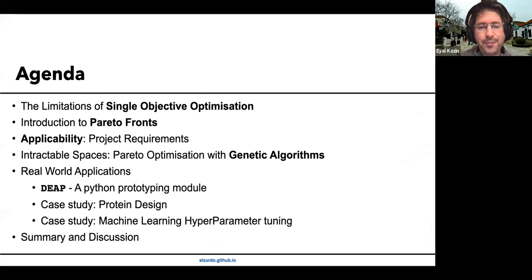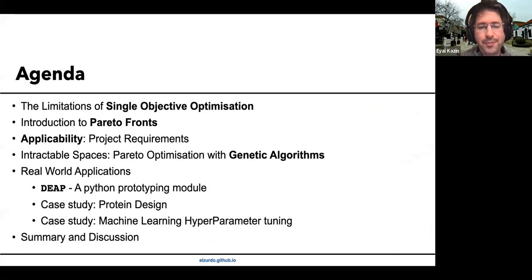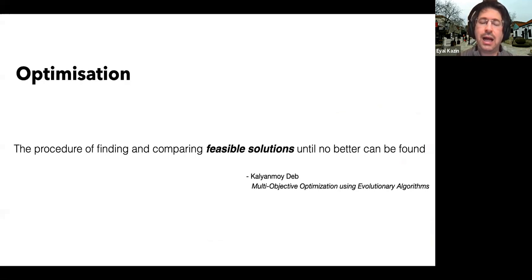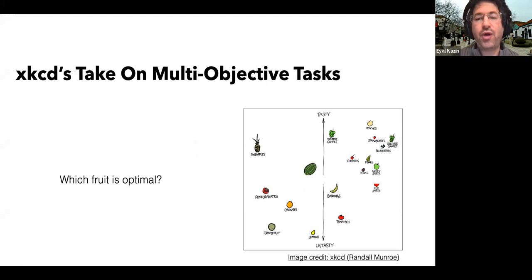This is a list of topics I want to go through. It seems daunting, but I'll break it down and hopefully you'll have appreciation for most of what I'm going to talk about today. I'll define how I'm going to use the term optimization in this talk: a procedure of finding and comparing feasible solutions until no better can be found. You know a topic is interesting if Randall Munroe, the creator of XKCD, has a comic strip about it.